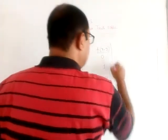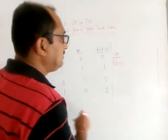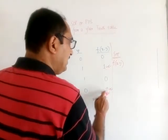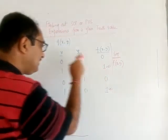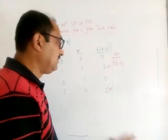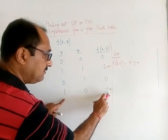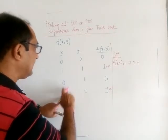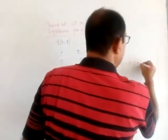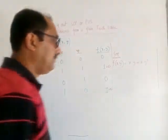So what is the SOP? For SOP, we consider the output values which are 1. In SOP, 1 means direct and 0 means complemented. With respect to the output value 1, if I look at the input values, I can see x=1 and y=1, which means x·y. For the other output value of 1, x=1 and y=0, that means x is direct and y is complemented. So we write x·y complement. This will be the required SOP expression: x·y + x·y complement.